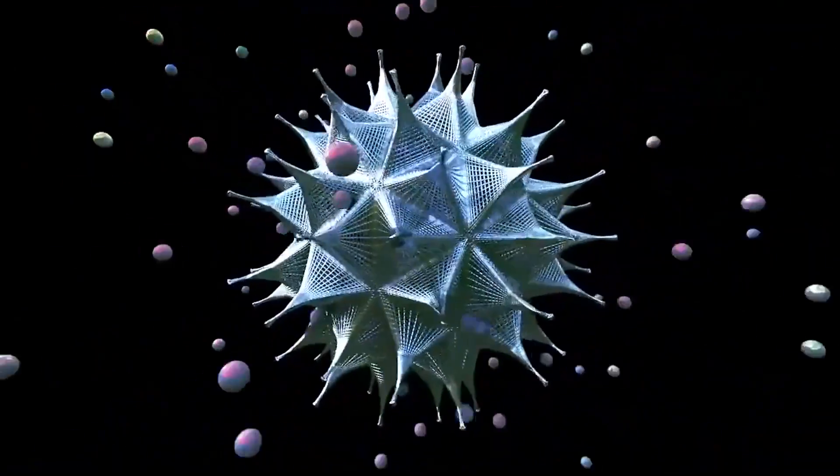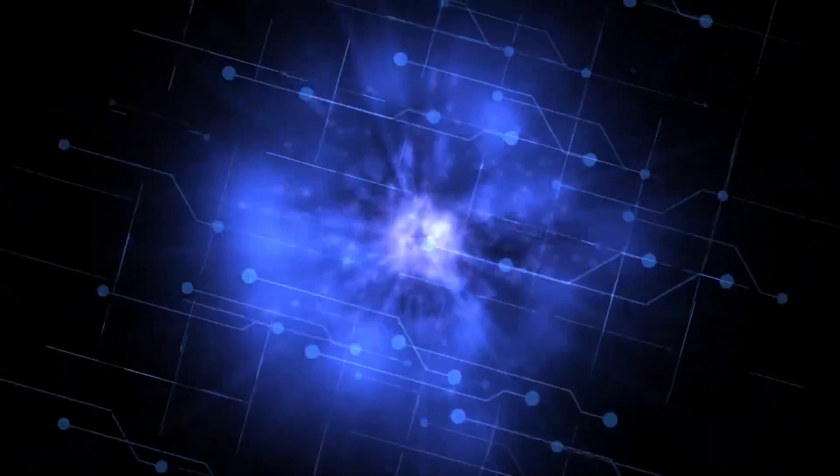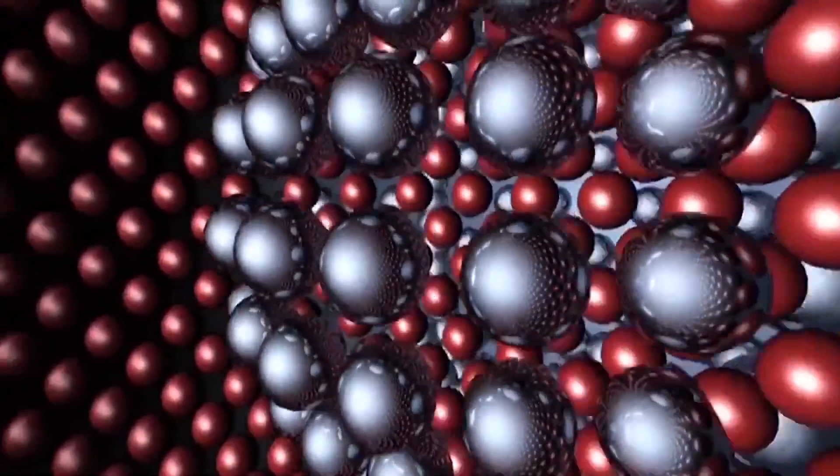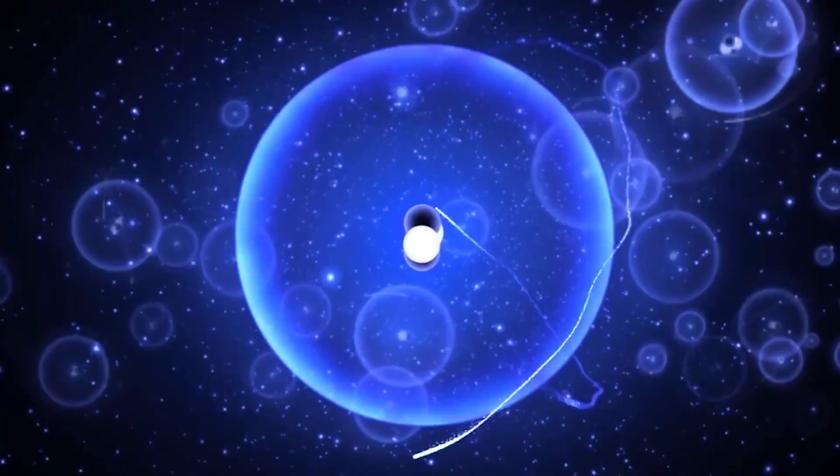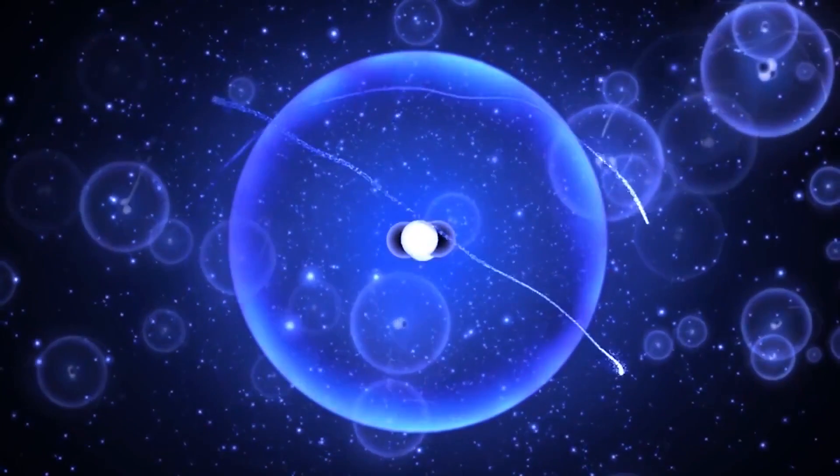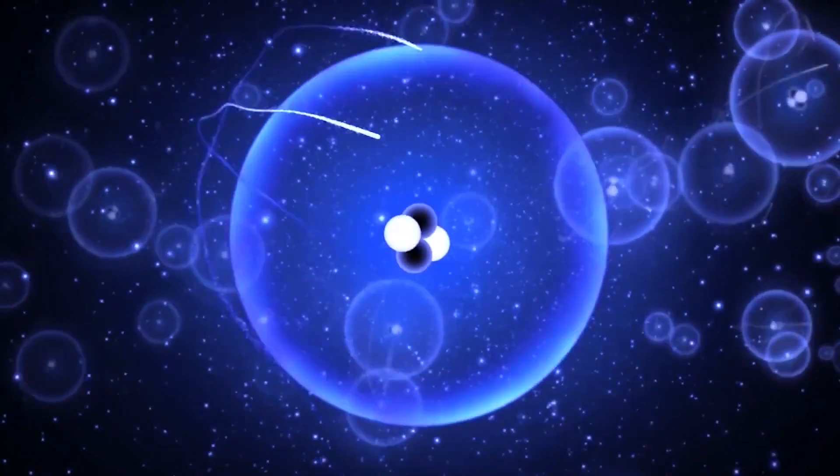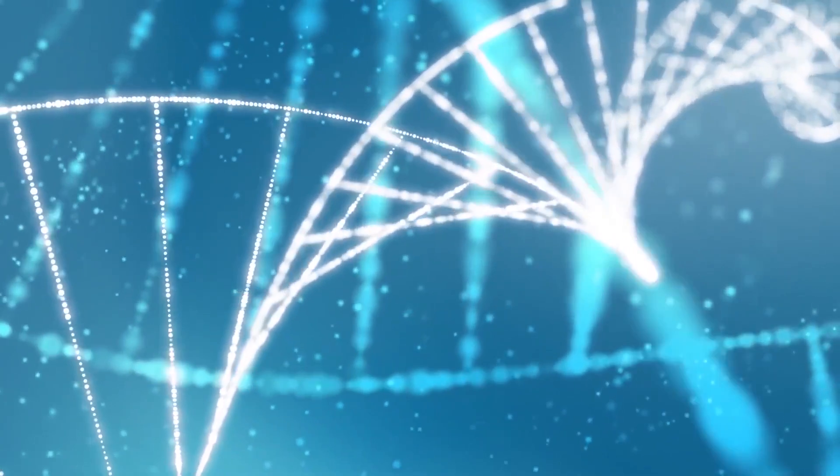Atoms are so small that we cannot really see them using even the strongest optical devices. In fact, we cannot even know with reasonable certainty what exactly an atom looks like. We can only assume this based on scientific theorizations.